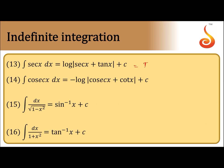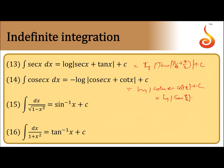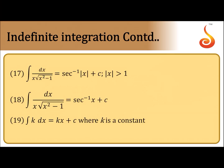The integral of cosec x equals −log|cosec x + cot x|, or log|cosec x − cot x| plus constant, which can also be written as log|tan(x/2)| plus constant. The integral of 1/√(1−x²) is sin⁻¹x + c or −cos⁻¹x + c. The integral of 1/(1+x²) is tan⁻¹x + c or −cot⁻¹x + c. The integral of 1/(x√(x²−1)) is sec⁻¹x + c or −cosec⁻¹x + c.